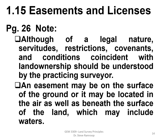Section 1.15: Easements and Licenses. Servitude restrictions, covenants, and conditions coincident with land ownership should be understood by the practicing surveyor. An easement is commonly understood as the use of someone else's property for the good of another — it may be on the surface, in the air, or beneath the surface of the land, and may include waters as well. A surveyor locating mineral rights may find that those minerals are thousands of feet below the surface.